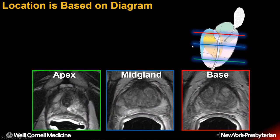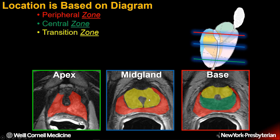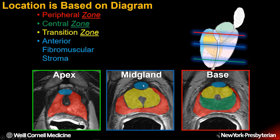The location is based on a diagram. The apex is the bottom of the prostate and the base is the top. The zones include the peripheral zone, which is the majority of the apex and surrounds the posterior and lateral aspects. The central zone is found only at the base and invests the ejaculatory ducts. The transition zone is generally heterogeneous and enlarged with prostatic hyperplasia. The anterior fibromuscular stroma is devoid of glandular elements and found anteriorly. And the urethra is found centrally.